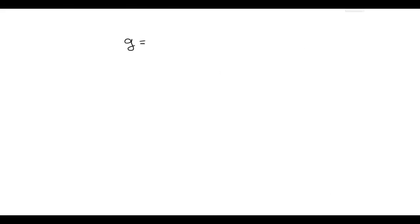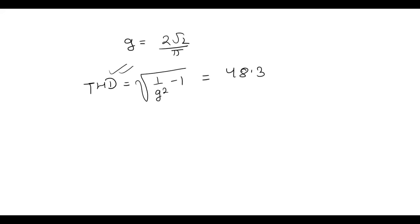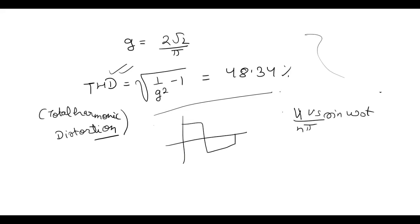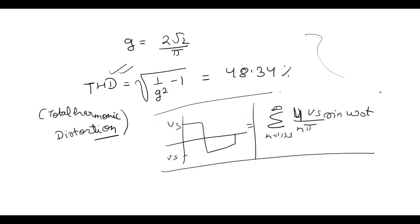In both cases G is 2√2 upon π. And now total harmonic distortion equals square root of (1 upon G squared minus 1), which equals 48.34%. This is the total harmonic distortion. You don't have to remember the whole process — just understand what is going on. Remember that this waveform has Fourier expansion as 4Vs upon nπ sin(nω₀t) where n equals 1, 3, 5 to infinity. Understanding is the key to everything. Thank you.